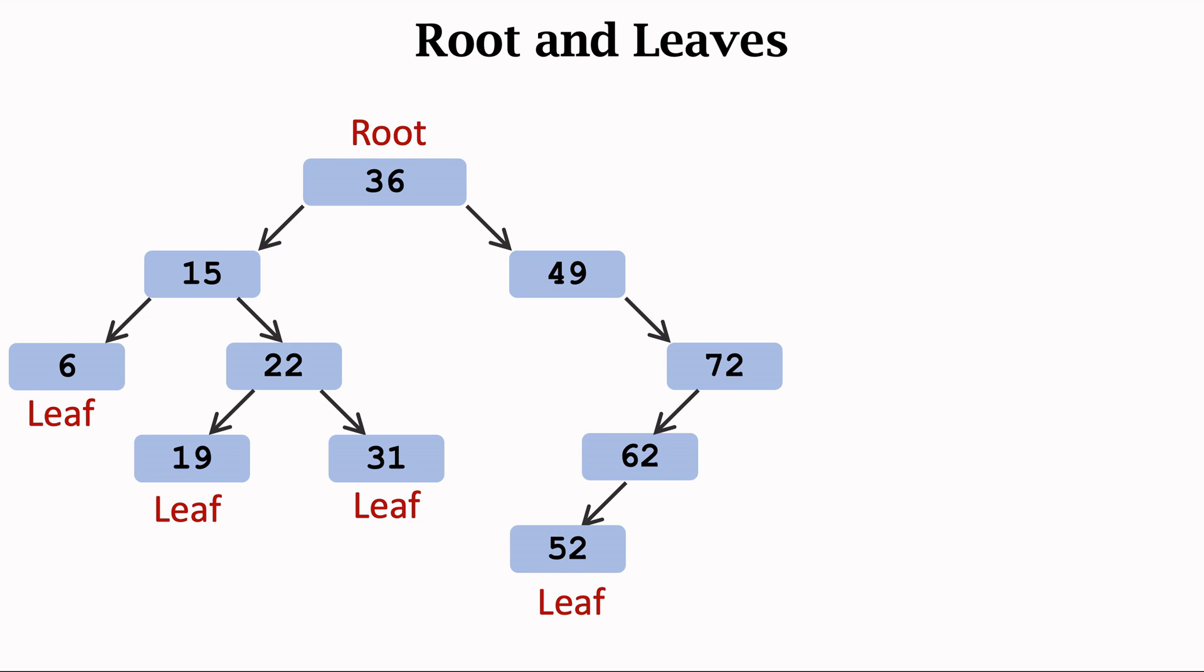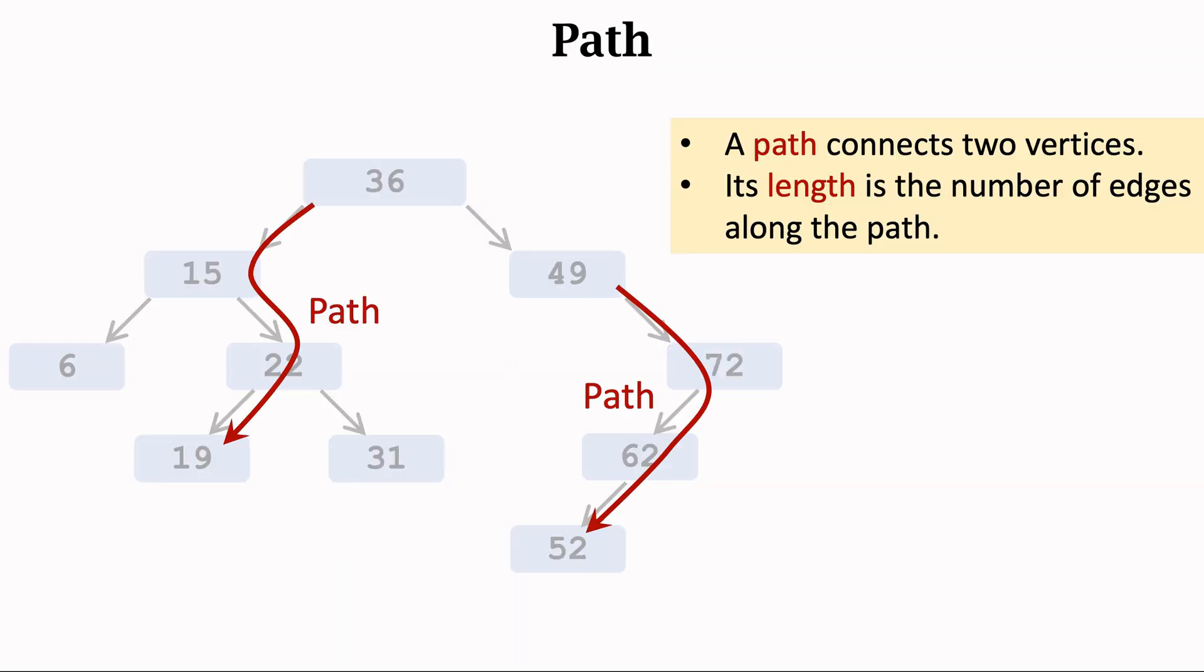Starting from the root, we can travel along some edges to reach a leaf. A path is a sequence of edges. A path connects two vertices.